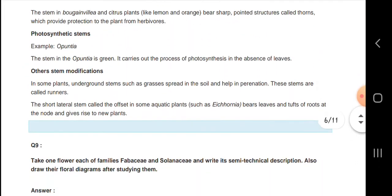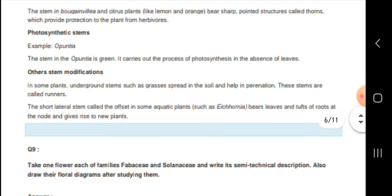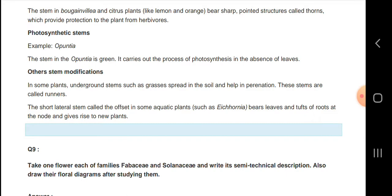In photosynthetic stem, the stem in Opuntia is green. Other stem modifications include underground stems such as in grasses that spread in the soil and help in vegetative propagation.